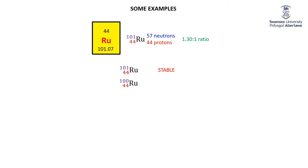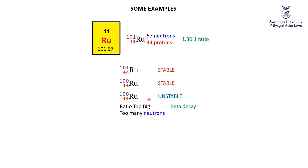So ruthenium-101 is stable — its mass is essentially bang on the ideal mass for ruthenium, giving the ideal 1.3:1 ratio. What about ruthenium-100? Well, 100 is pretty close to the nice mass of 101, so I would say 100 is going to be stable too. How about ruthenium-108? That's about seven away from the ideal 101, which is definitely too far. Its mass is too high, and since the number of protons hasn't changed — still 44 — ruthenium-108 must have too many neutrons. So I predict it's unstable and undergoes beta decay.